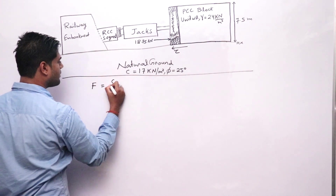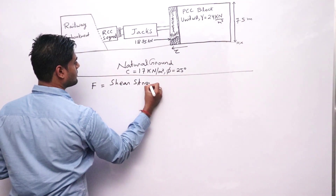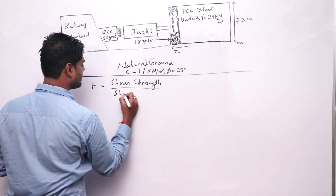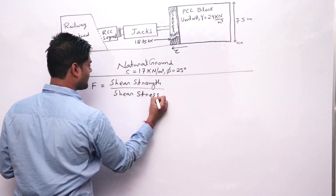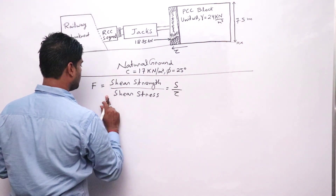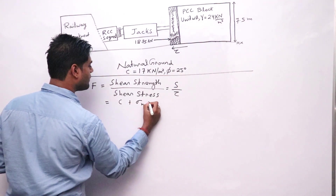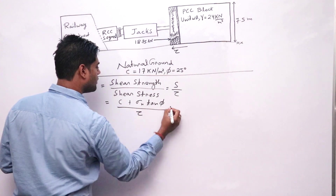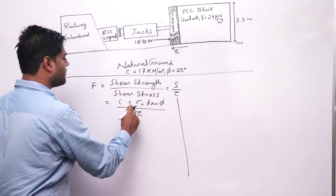The factor of safety is shear strength divided by shear stress, that is s divided by tau. We know shear strength equals c plus sigma_n tan(phi) divided by tau. In this question there is a tricky calculation of sigma_n.